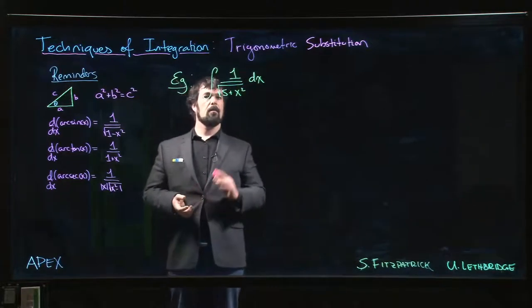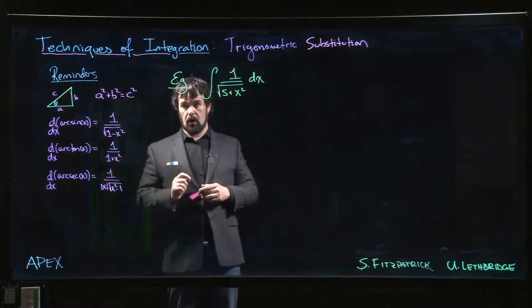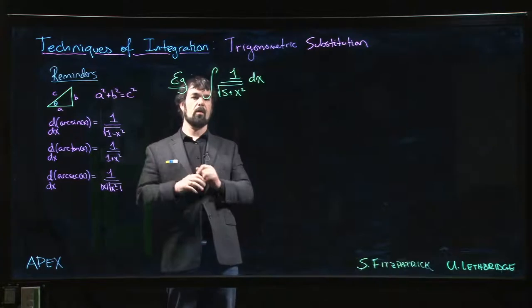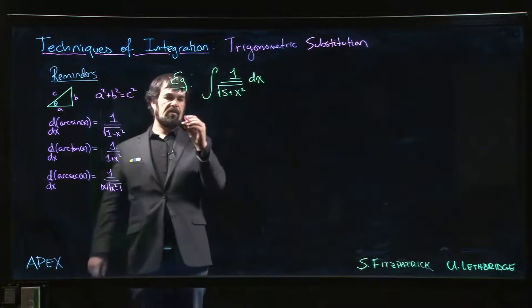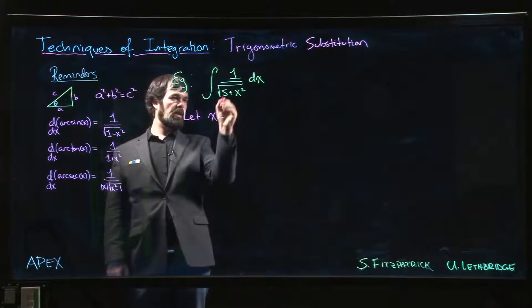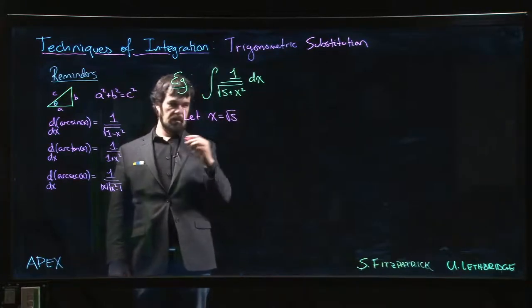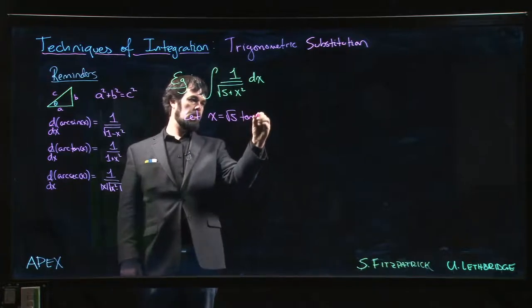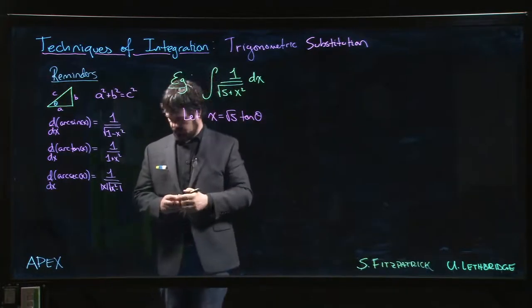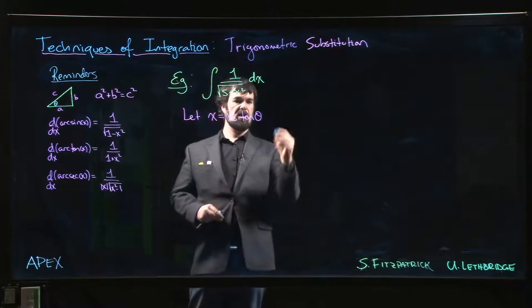Here's our next example. This time 5 plus x squared looks a lot like arctan, right? We see a number plus x squared, which suggests that we should let x equal root 5 tan theta. We need a number that squares to 5, well that's root 5. So x equals root 5 tan theta. And again, we might want to kind of keep in the back of our mind that what this really means...